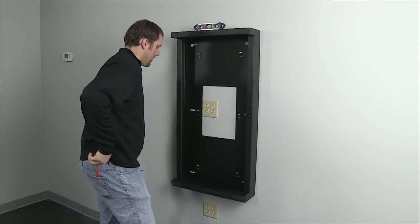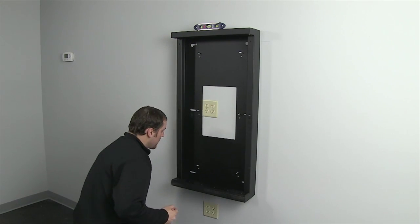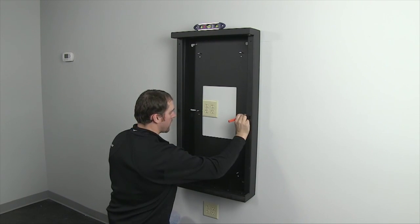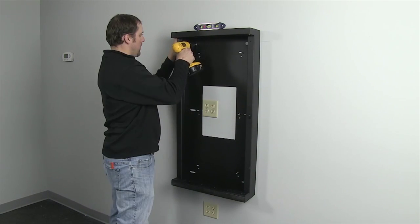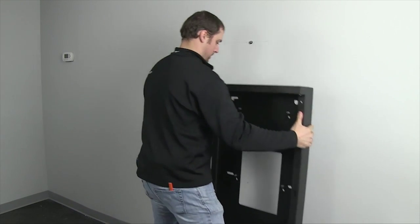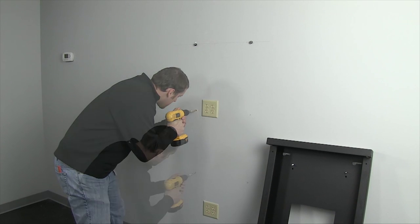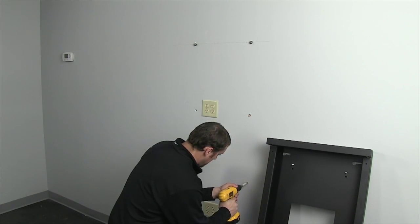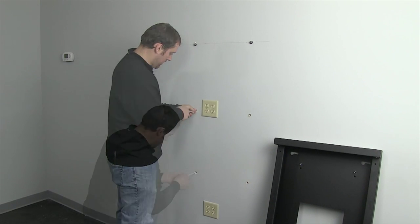Now mark the remaining mounting points within the rear section of the rack. Because the pilot holes for the anchors are larger than the slot in the rear rack section, the rack must be removed. Loosen the upper two mounting screws and lift the rear rack section from the wall. Drill the pilot holes at each previously marked location and then insert the remaining steel stud anchors.